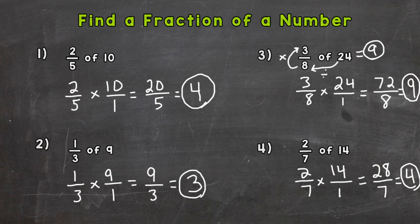Using the division method first: 14 divided by 7 tells us what 1 seventh of 14 is, which equals 2. Then I take that result and multiply by how many sevenths I want — which is 2. So 2 times 2 equals 4. We get the same answer either way.